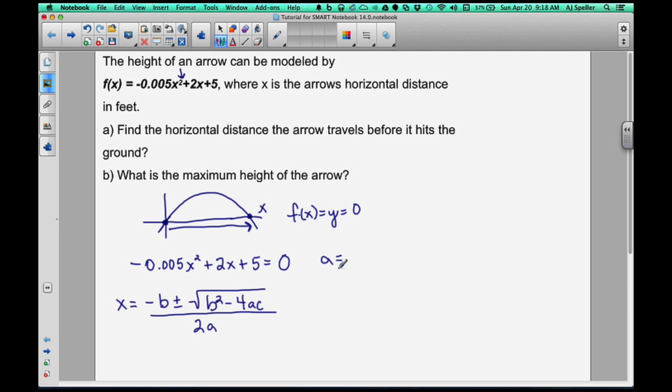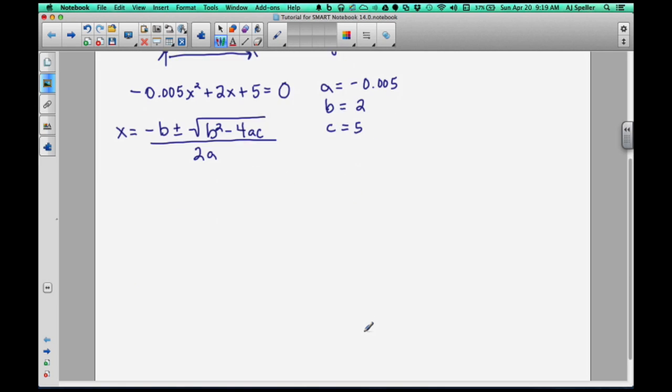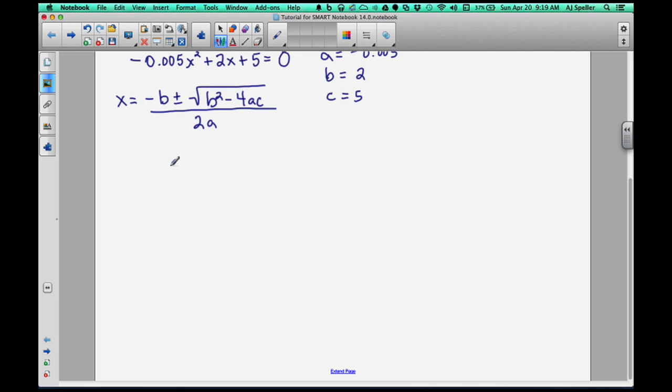In this particular example, we need to grab the coefficients for each one of our terms. The coefficient for our x squared term corresponds to a, and that's negative 0.005. The coefficient for the x term is 2. And our constant here is 5.